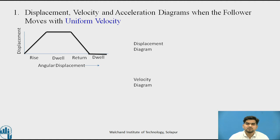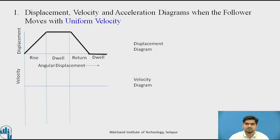Then you should know how to draw the velocity diagram. This is a horizontal line. We have projected lines from the initial point when the cam just starts rotating. The y-axis indicates the velocity. We have projected the line in which the rising of the follower occurs, then dwell, then return, and again the dwell. As the displacement moves with uniform velocity, we get the velocity for the rising period like this.